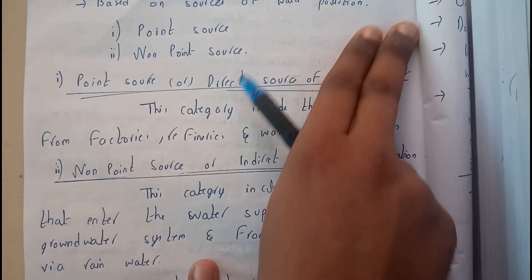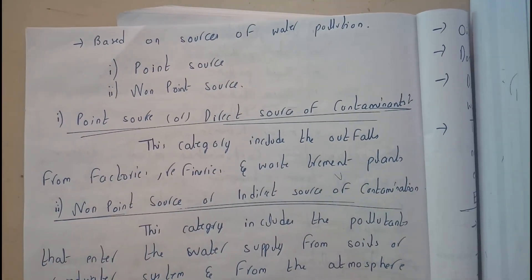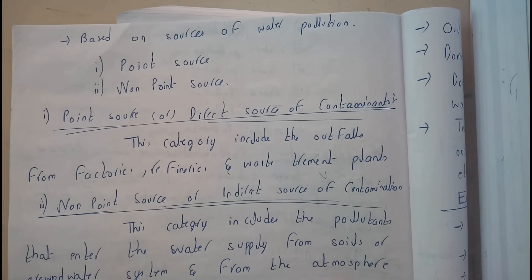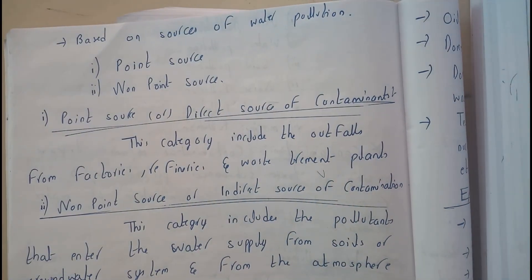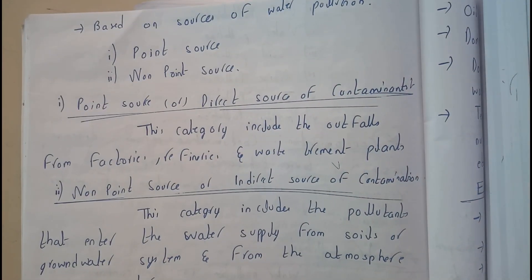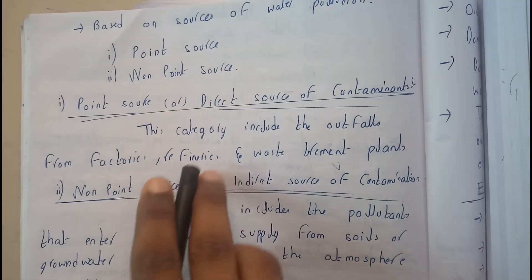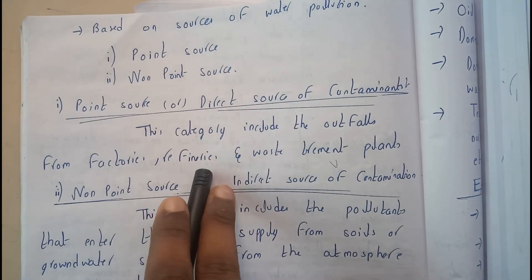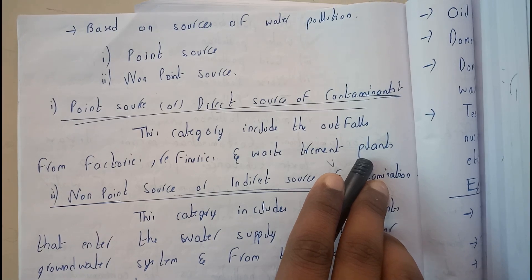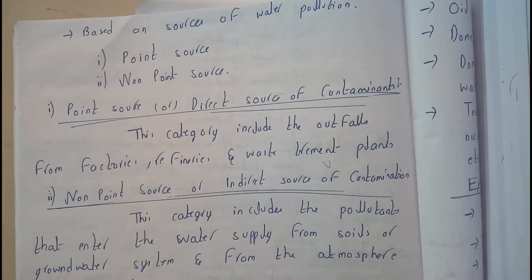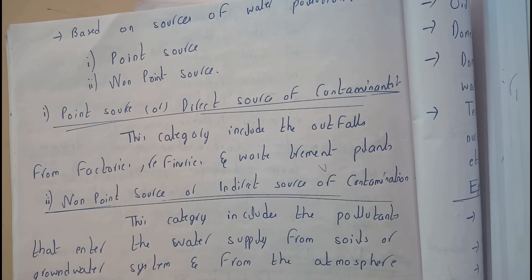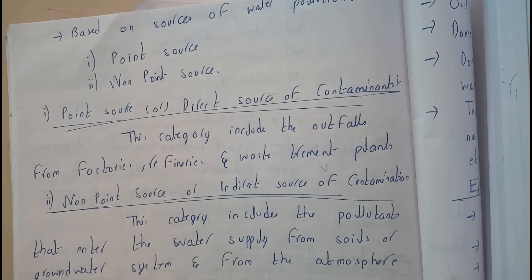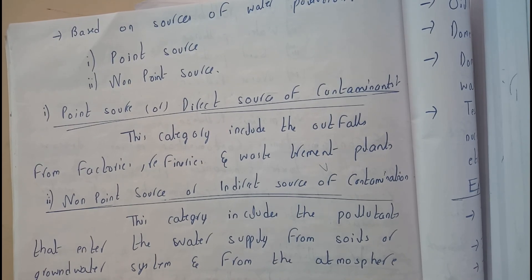Let's go with types of water pollution, that is the sources of water pollution. There are two types: point source and non-point source. Point source includes factories, refineries, and waste treatment plants — it is a direct emission into water. Non-point source is a more lengthy, indirect process but results in the same outcome.